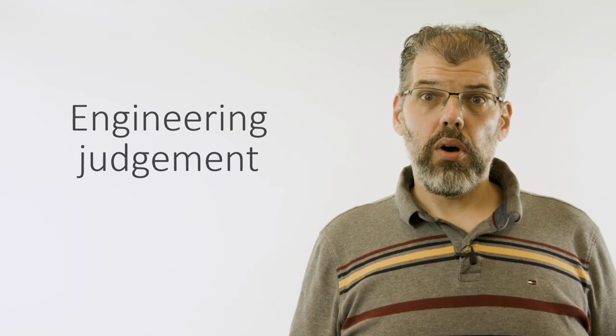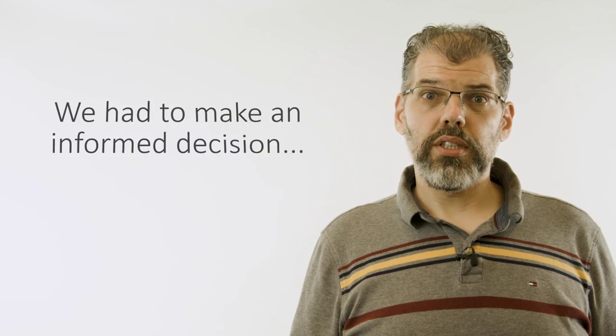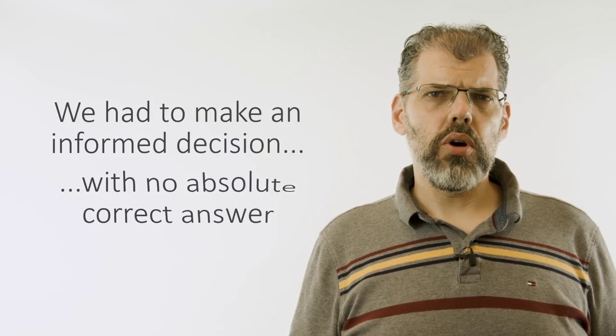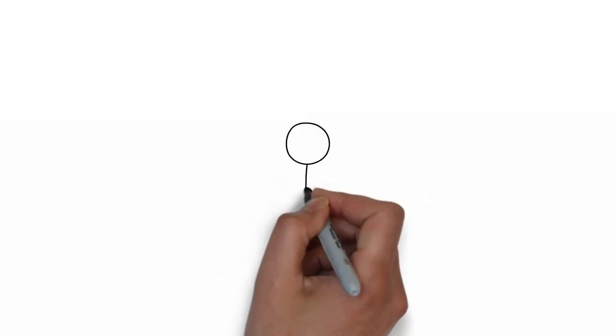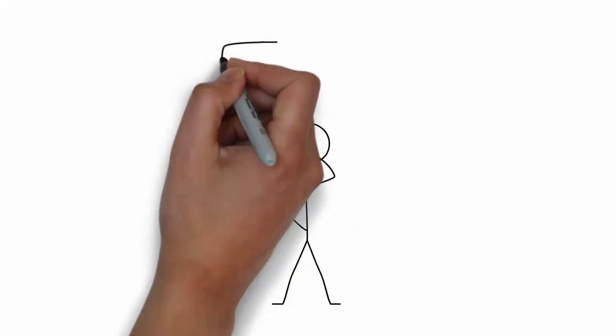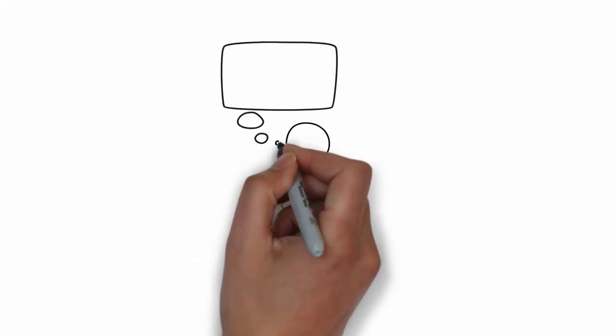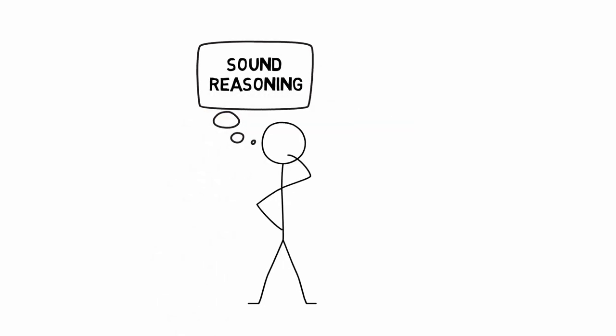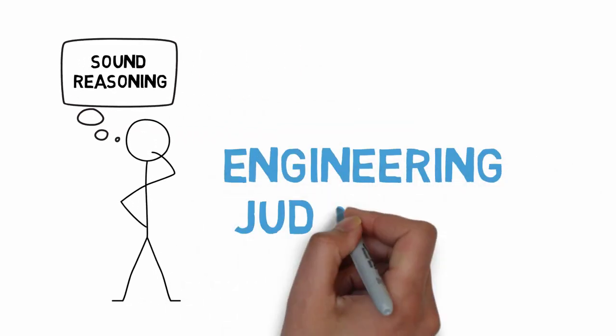You might have noticed that our final decision is not a calculated result. We had to apply what we call engineering judgment. We had to make a decision based on some quantitative results, but there was no absolute correct answer. As an engineer, we often have to make such decisions ourselves and be prepared to defend that choice based on sound reasoning, what we call engineering judgment.